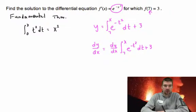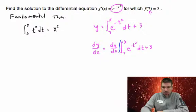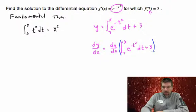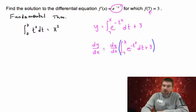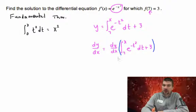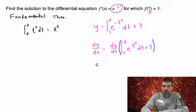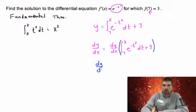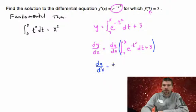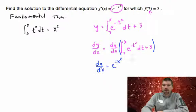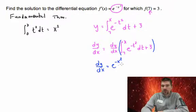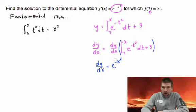And remember we're just talking about derivative of just everything over here. So derivative of the integral then just becomes e to the negative x squared. Remember that the derivative of the 3 becomes 0. So there's our f prime.